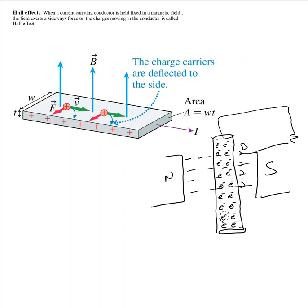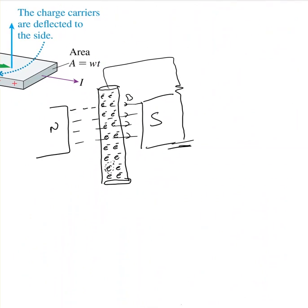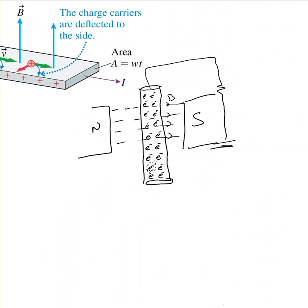Now if I connect this conductor to a battery — negative and positive — there is current passing through this because there is a resistance R and voltage V. There is now an electric field, and these electrons are going to move in one direction.